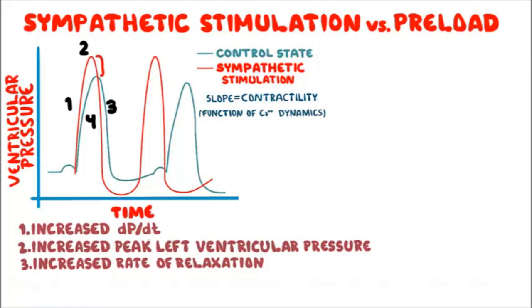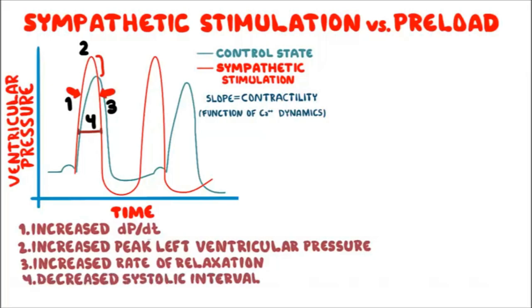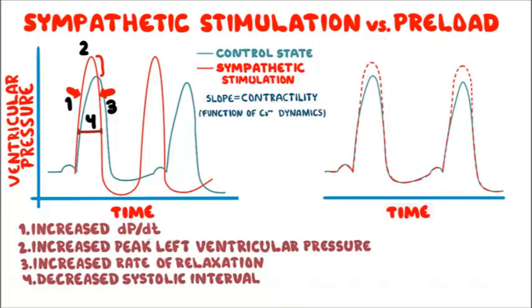Because both the upslope and downslope are steeper, the systolic interval narrows — meaning we spend less time in systole. So the fourth effect of sympathetic stimulation is decreasing the systolic interval. An important point is that increased preload also increases peak left ventricular pressure, because preload also increases the force of contraction. The only difference is that with preload, there is no significant change in the systolic interval — this is high-yield for USMLE Step 1.